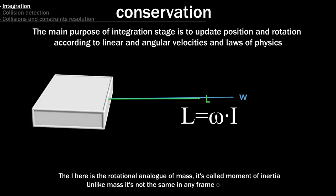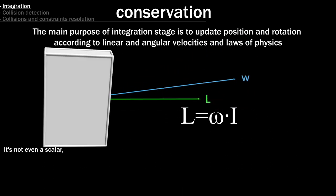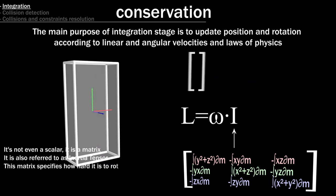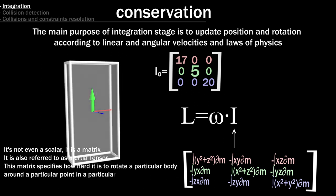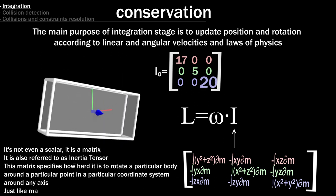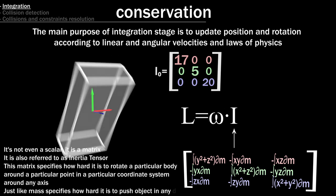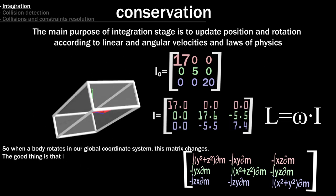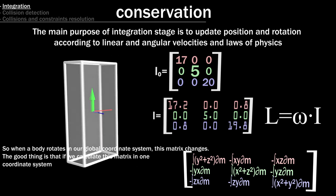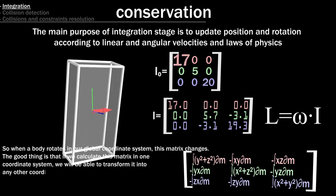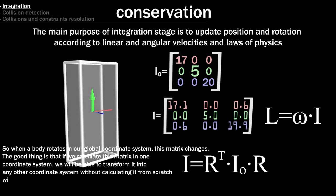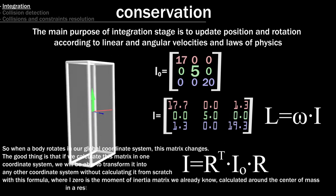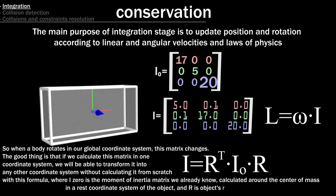Unlike mass, it's not the same in any frame of reference. It's not even a scalar, it is a matrix. It is also referred to as inertia tensor. This matrix specifies how hard it is to rotate a particular body around a particular point in a particular coordinate system around any axis. Just like mass specifies how hard it is to push object in any direction. So when a body rotates in our global coordinate system, this matrix changes. The good thing is that if we calculate this matrix in one coordinate system, we will be able to transform it into any other coordinate system without calculating it from scratch. With this formula, where I zero is the moment of inertia matrix we already know, calculated around the center of mass in a rest coordinate system of the object, and R is a object's rotational matrix.